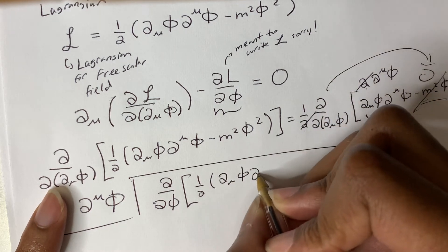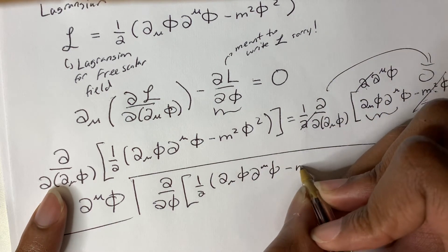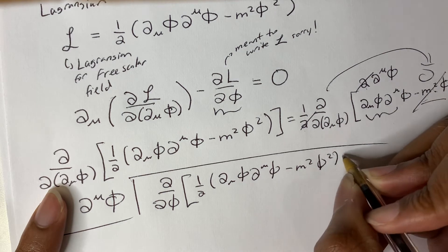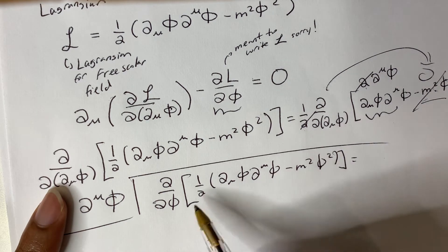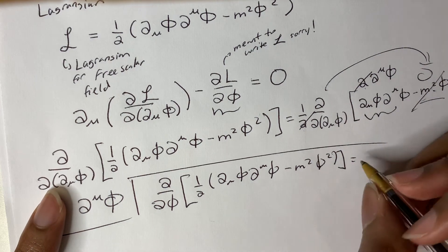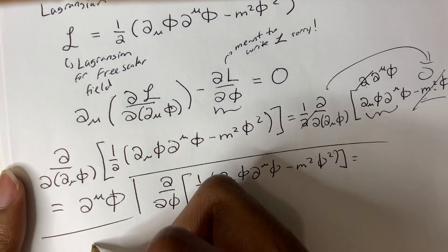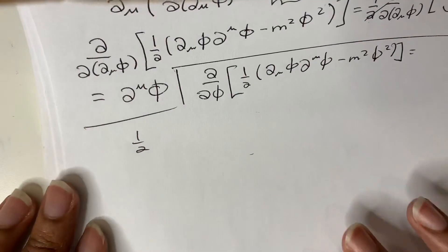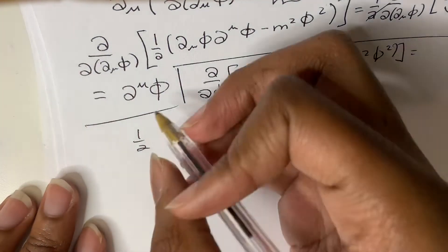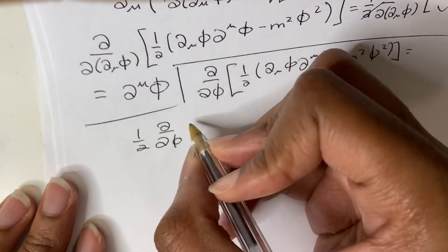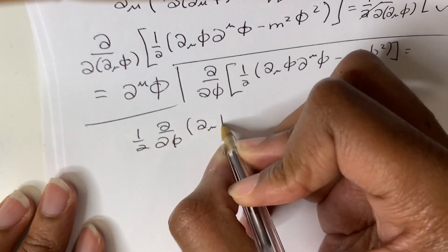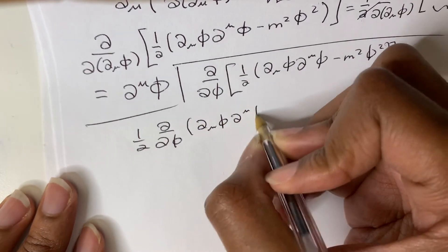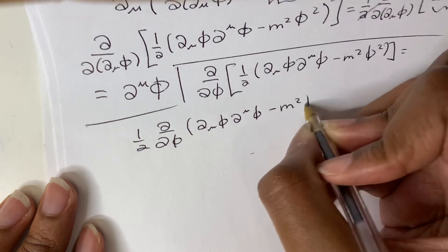Partial mu phi, partial mu phi, minus m squared phi squared. We then move the one-half to the front. We have one-half of partial over partial phi of partial mu phi, partial mu phi minus m squared phi squared.